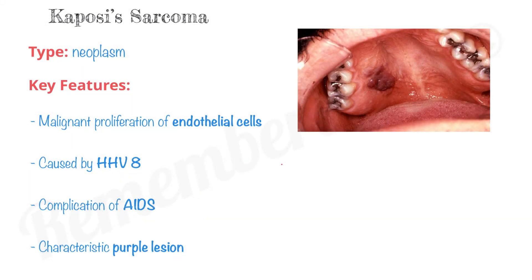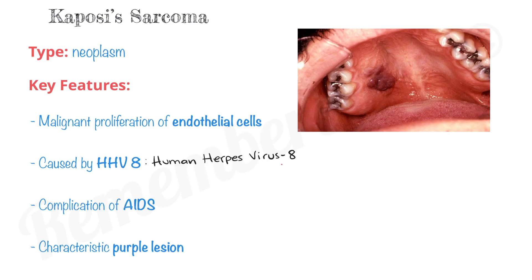Kaposi's sarcoma is a type of neoplasm. Key features: it's a malignant proliferation of endothelial cells, it is caused by HHV8 or human herpesvirus 8, it's a complication of AIDS, and it presents as a characteristic purple lesion.